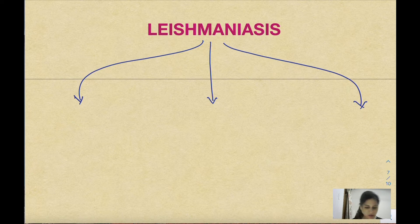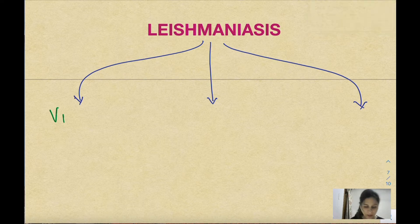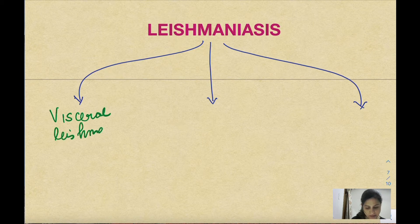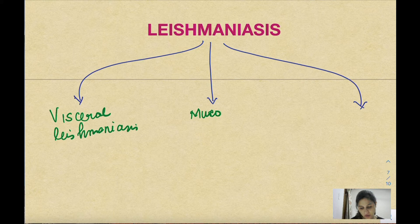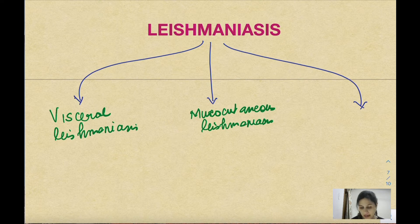There are three types of leishmaniasis. The first type is visceral leishmaniasis, where the viscera are involved. The second type is mucocutaneous leishmaniasis, involving the mucocutaneous parts. The third is dermal leishmaniasis, which means the skin is involved.